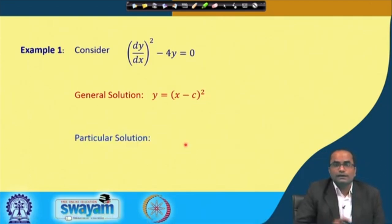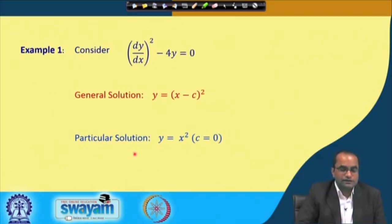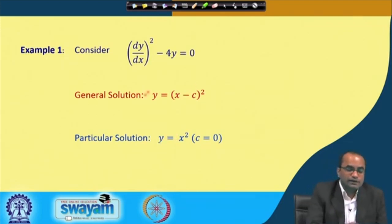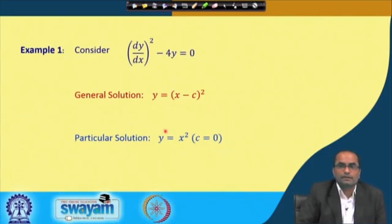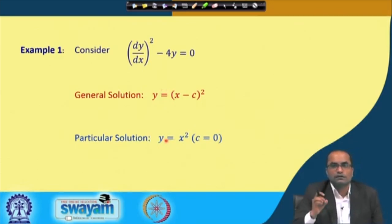For the particular solution, we assign a specific value to c. For instance, setting c = 0 gives y = x², which is also a solution of this differential equation. This is a particular parabola, one fixed curve out of the family of parabolas. We call this a particular solution, not the general solution — both satisfy the differential equation, but one is general and the other is a particular curve out of this one-parameter family.